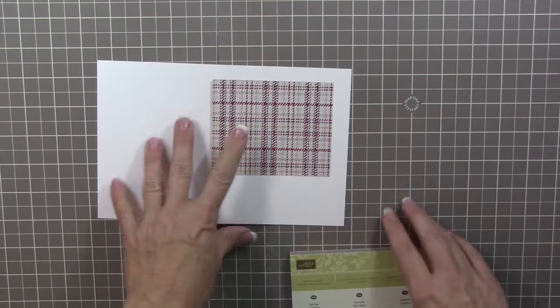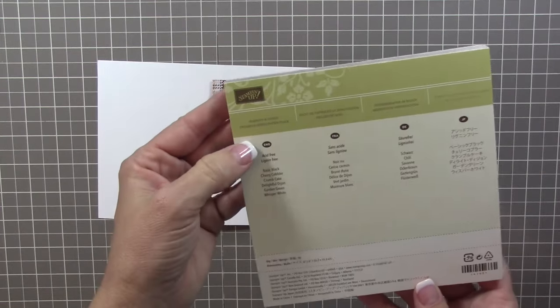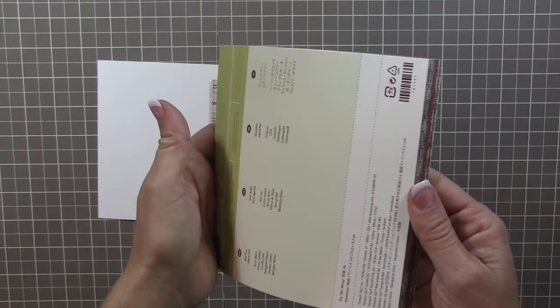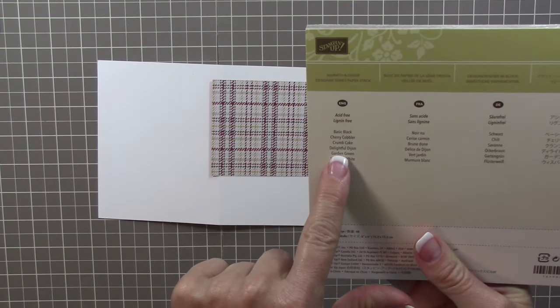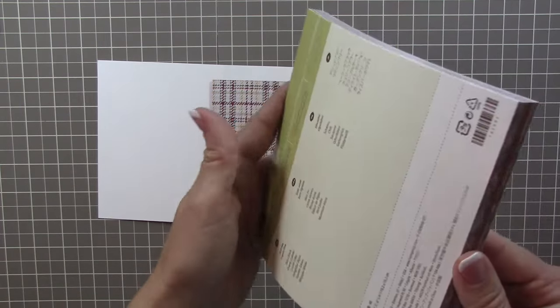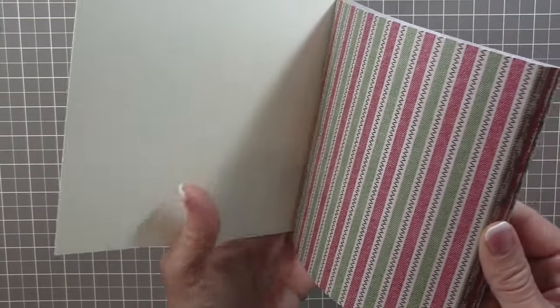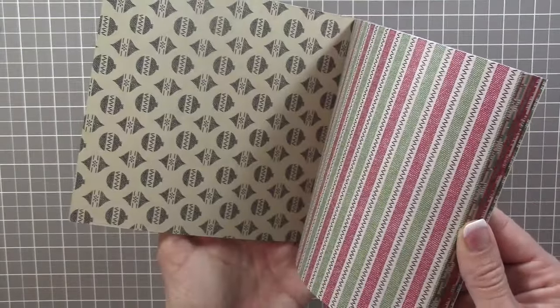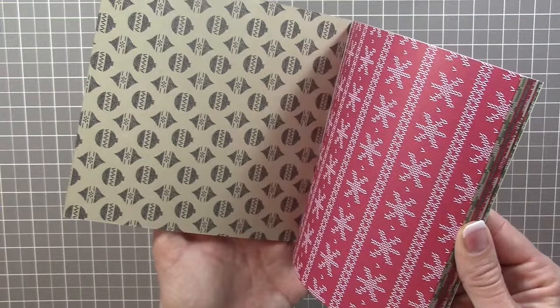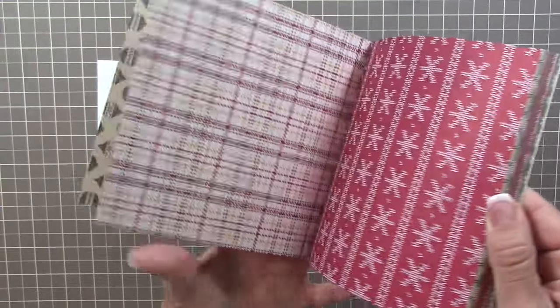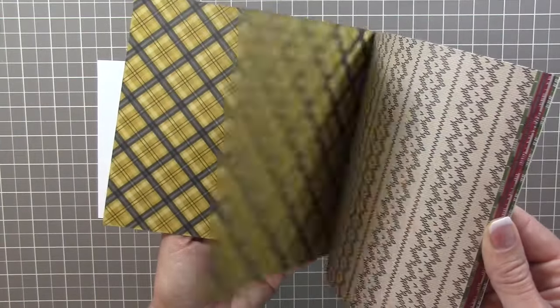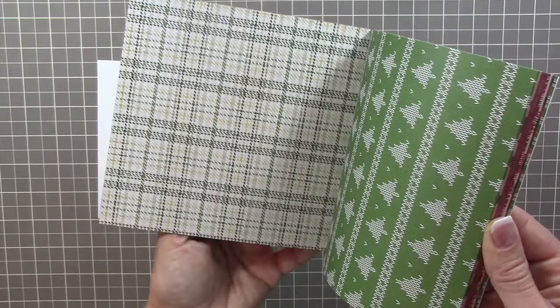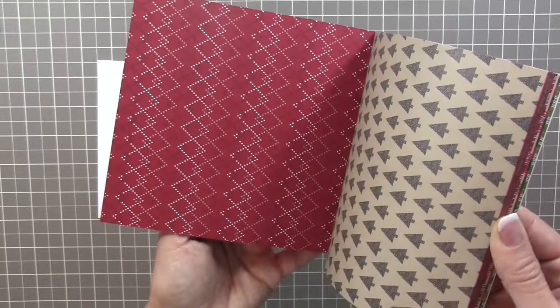Here I am using the warmth and cheer designer series paper stack, and I'm going to show you all the different colors that are in the collection. You see basic black, cherry cobbler, crumb cake, delightful Dijon, garden green, and whisper white. You get 48 sheets with 12 double-sided designs.